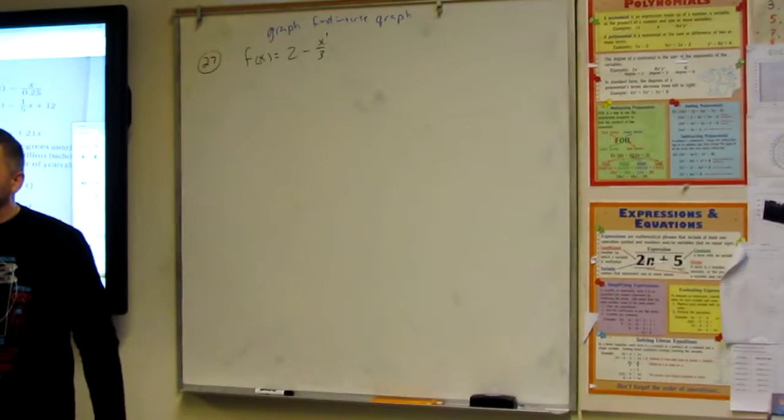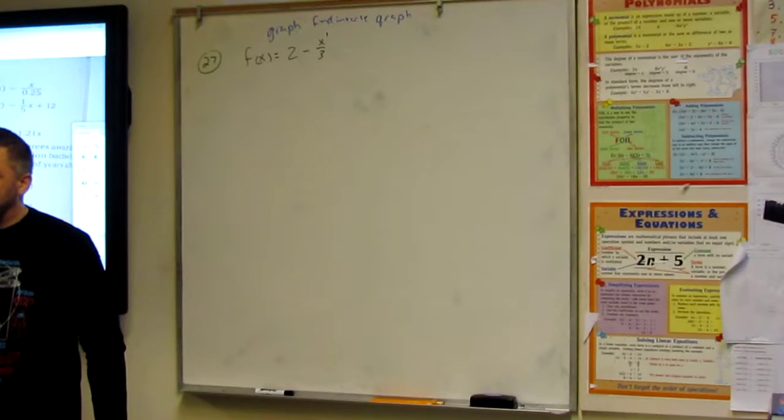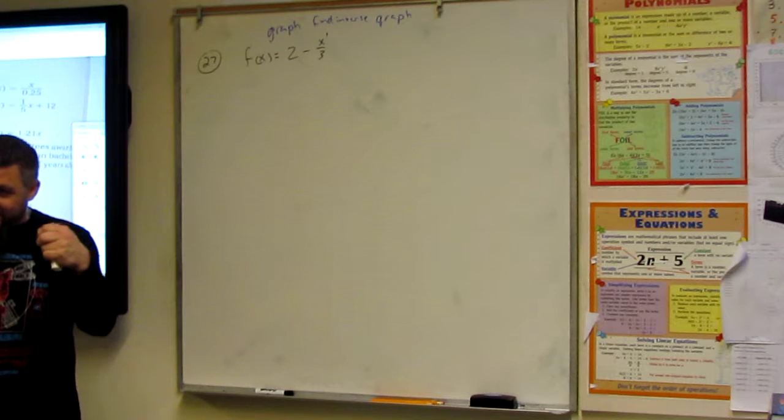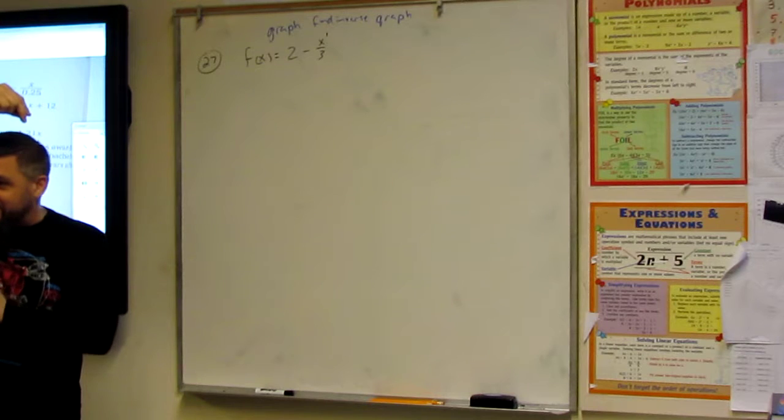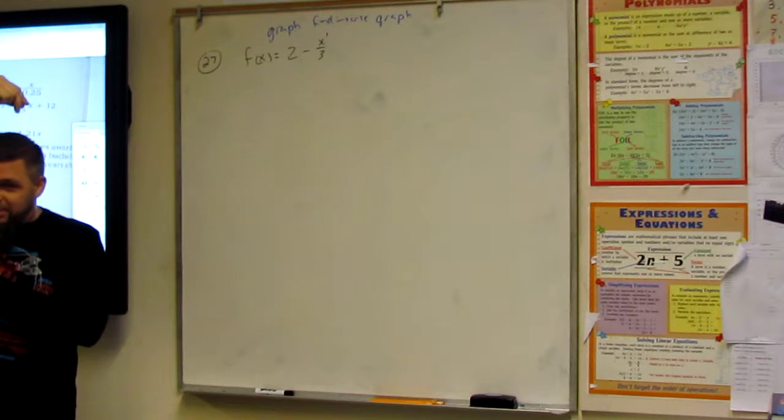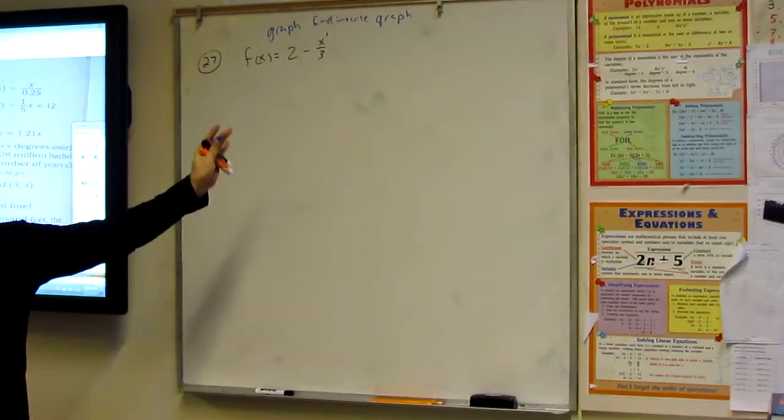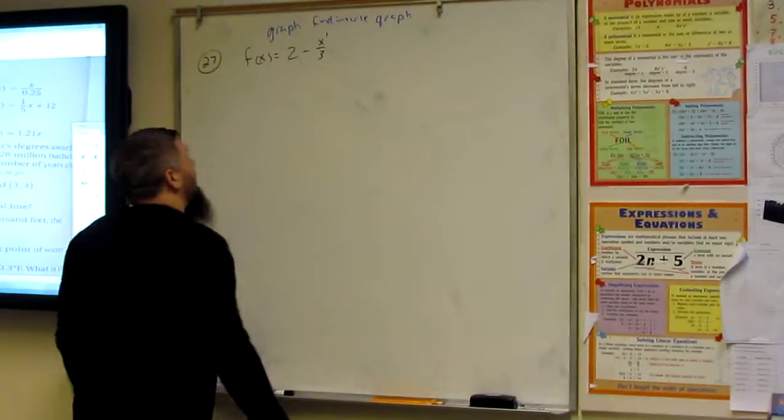If it's linear, what's the inverse got to be? People. If I take the graph, and it's a line, and then I flip the paper, does it change from being a line? No. So it's going to be a line. Wake up, please.